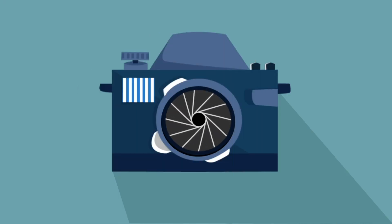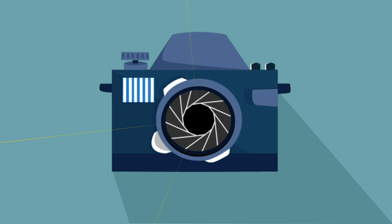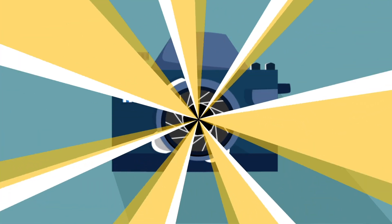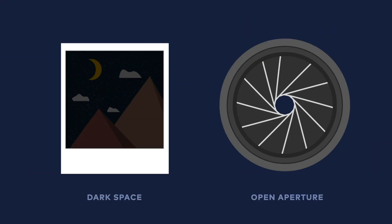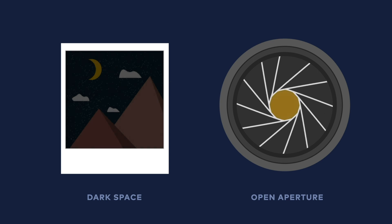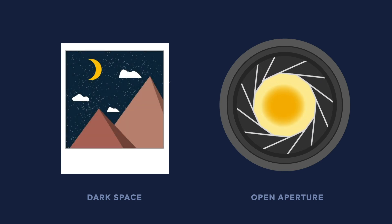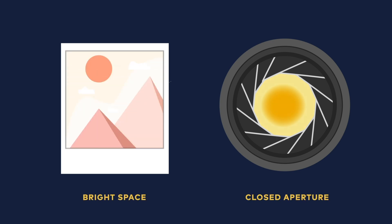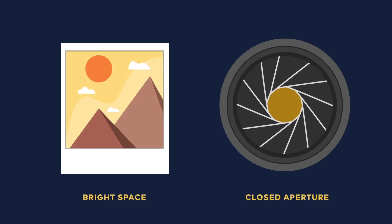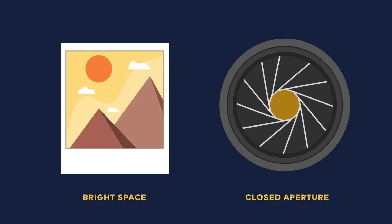Aperture is the opening in the lens through which the light passes to enter the camera. When you're in a dark space you want to open up the aperture to let more light in — that way your image won't be dark. When you're in a bright space you want to close the aperture and let less light in — that way your image won't be overexposed.